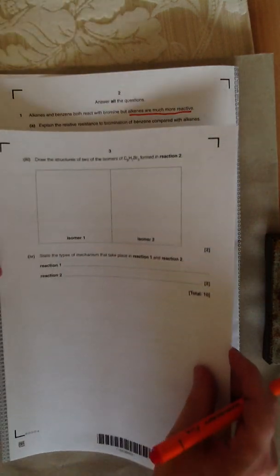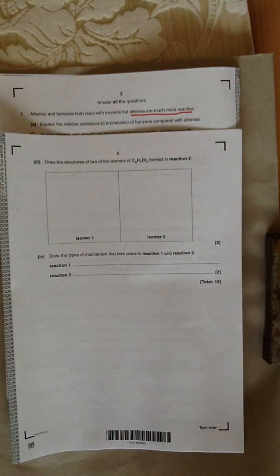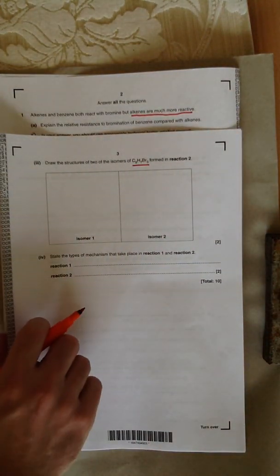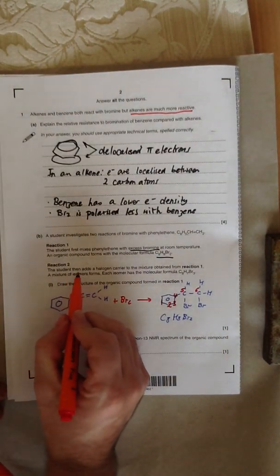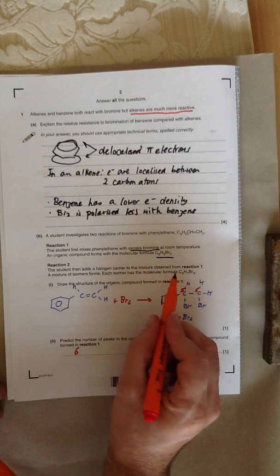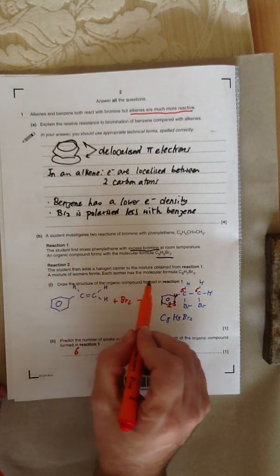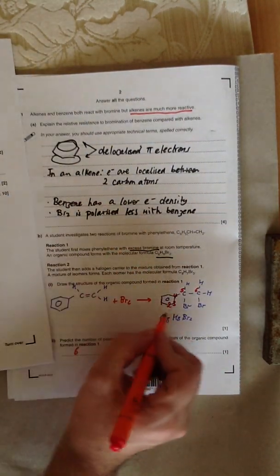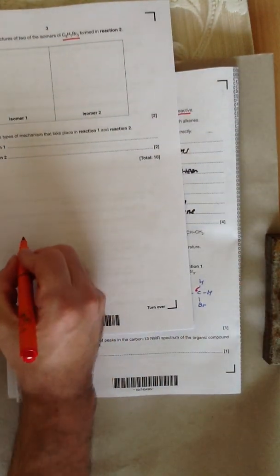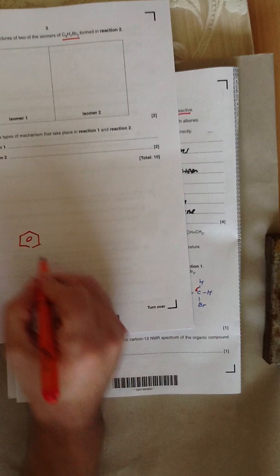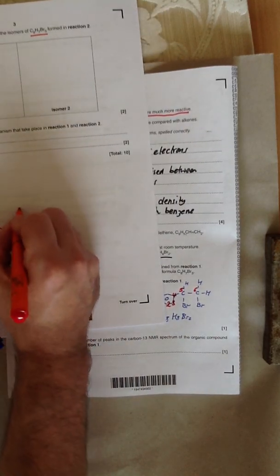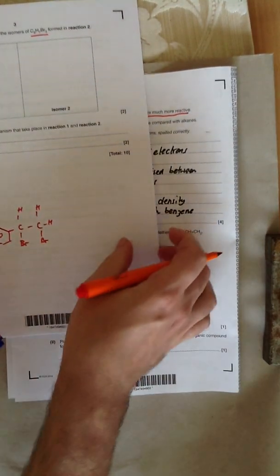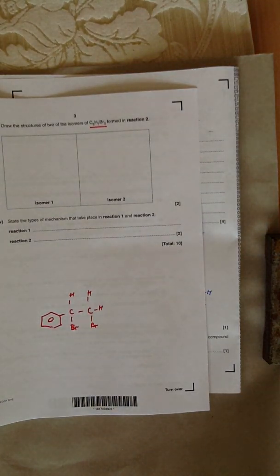The question then goes on to say, draw the structures of the two isomers of C8H7Br3 formed in reaction 2. Reaction 2 says the student adds a halogen carrier to the mixture obtained from reaction 1. A mixture of isomers forms. Each isomer has the molecular formula C8H7Br3. If I copy this structure down to here to make it easy to see, this is the product from reaction 1 that we've got. If we've got that with a halogen carrier and Br2, what do we get?